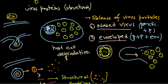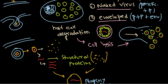For naked viruses, after producing a large number of them inside the host cell, they start secreting chemical components that eventually lead to cell lysis. Through this cell lysis pathway, the host cell eventually lyses and all the virus particles are released outside, as you can see in this picture.